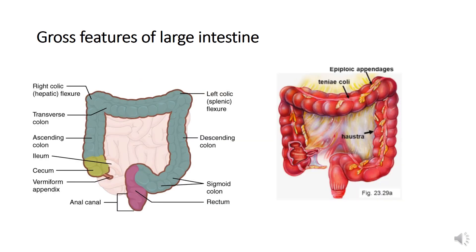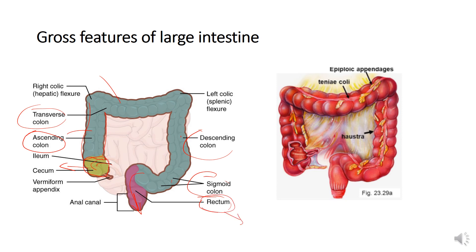The large intestine starts from the ileocecal junction where the ileum meets the cecum. The cecum is the first part of the large intestine. The other parts are the ascending colon, transverse colon, descending colon, sigmoid colon, rectum, and the anal canal. The cecum and colon are indistinguishable histologically, so we will study the cecum, ascending, transverse, descending, and sigmoid colon under one heading. The rectum and anal canal will be studied separately.